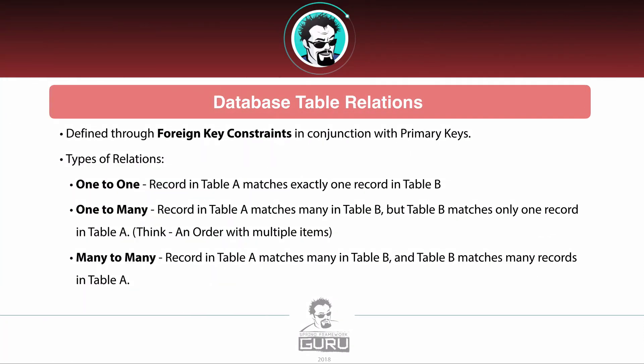Now let's talk about database table relations. These are done through what's called a foreign key constraint, working in conjunction with primary keys. There are three primary relation types. The first is a one-to-one relation, where a record in table A matches exactly one record in table B — you see this often to define an attribute or extend a table. Then there's one-to-many, which is a very, very common relationship: a record in table A matches many records in table B, but each record in table B only has one matching record in table A.